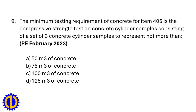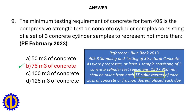The minimum testing requirement of concrete for Item 405 is the compressive strength test on concrete cylinder samples consisting of a set of three concrete cylinder samples to represent not more than: a. 50 m³, b. 75 m³, c. 100 m³, d. 125 m³. Answer: b. 75 cubic meters of concrete. Reference: Blue Book 2013, Sampling and Testing of Structural Concrete — at least one sample of three 150×300 mm cylinder specimens shall be taken from each 75 m³ of each class of concrete placed each day.